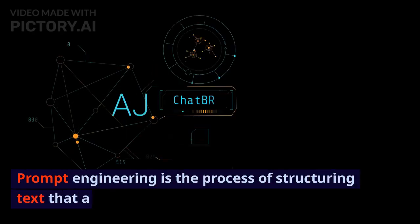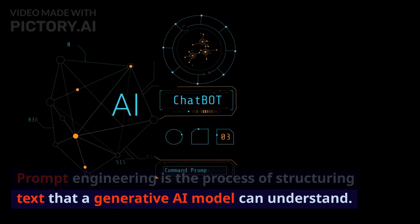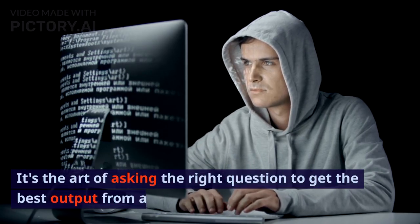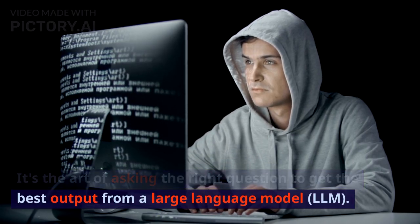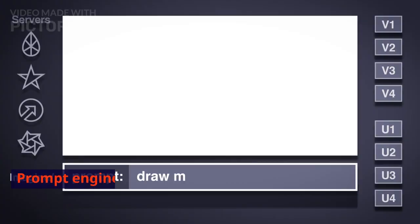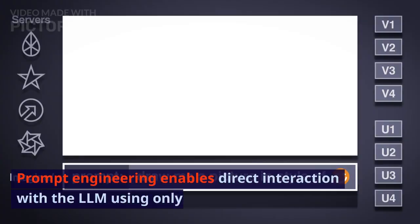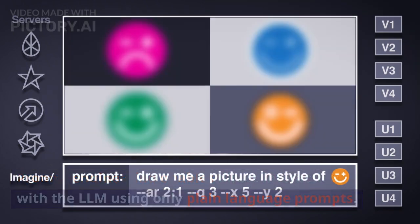Prompt engineering is the process of structuring text that a generative AI model can understand. It's the art of asking the right question to get the best output from a large language model, LLM. Prompt engineering enables direct interaction with the LLM using only plain language prompts.